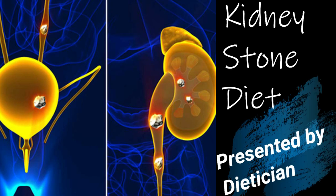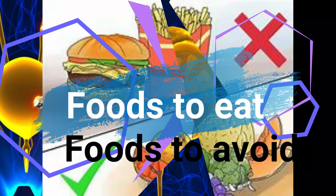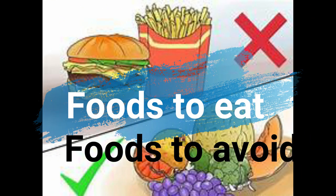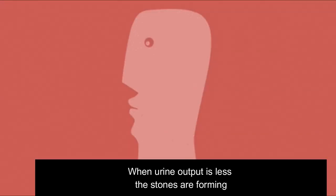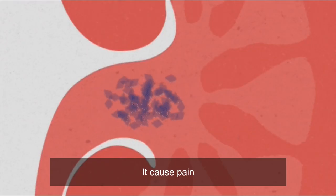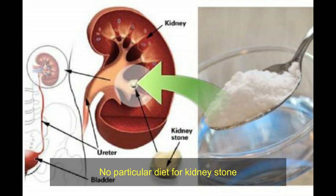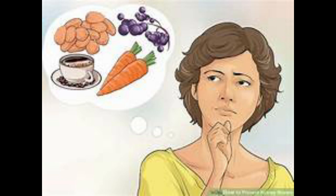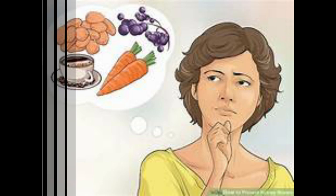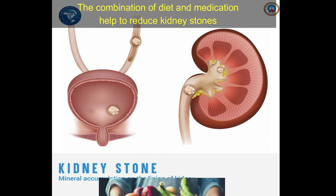Today's topic is kidney stone diet: foods to eat and avoid. Kidney stones form when a person's urine output decreases and when the kidney contains large numbers of certain minerals that stick together and form stones. They cause excruciating pain when they pass through your urinary tract. There's no one sure way to prevent kidney stones, especially if you have a family history of the condition. A combination of diet and lifestyle changes, as well as some medications, may help reduce your risk.